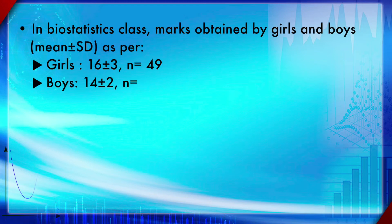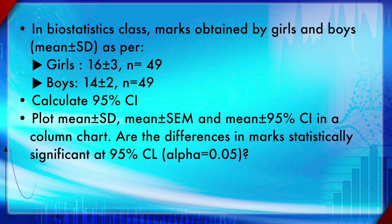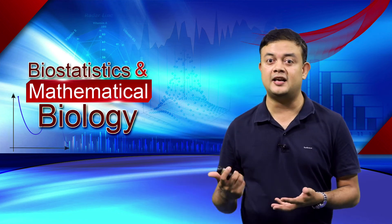For example, in a biostatistics class, girls scored mean ± SD of 16.1 (n = 49) and boys scored 14.2 (n = 49). With these values you can calculate SEM = SD / √n, then multiply by the t* constant to get the 95% CI. You can then plot the two CIs separately to see if the 95% CI overlap or not, and make valid statistical inferences — even without performing formal statistical tests like the f-test or t-test.